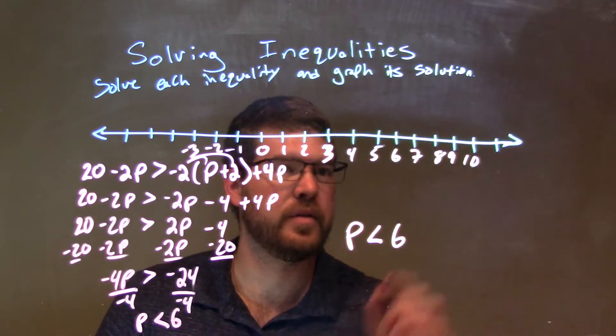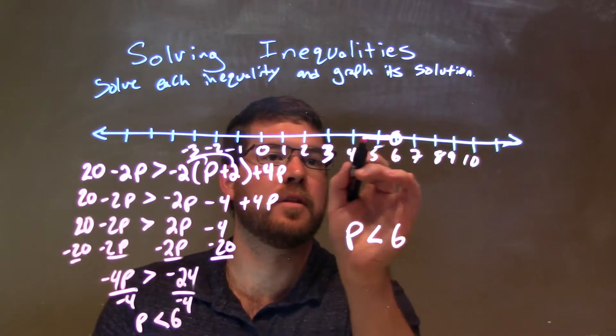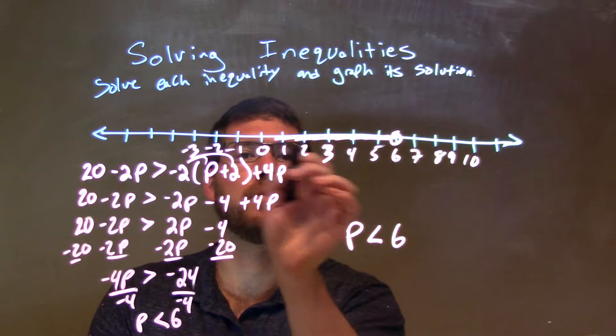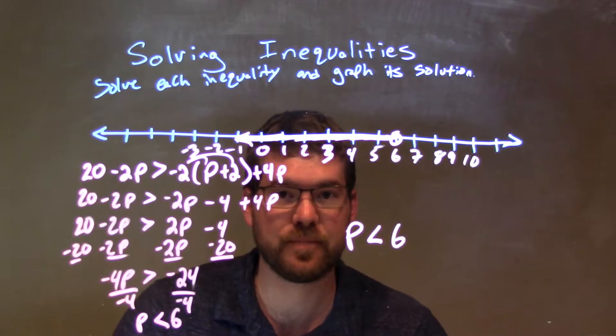So, if p is less than 6, we have an open circle at 6, and we need to shade to the left. So, we shade to the left right there. There we have it. We have p is less than 6.